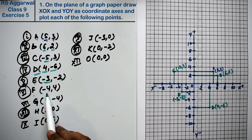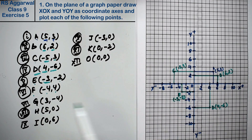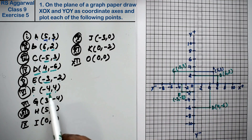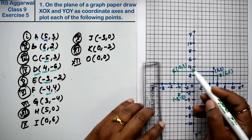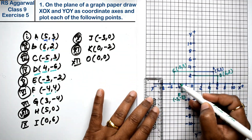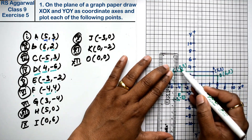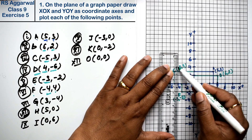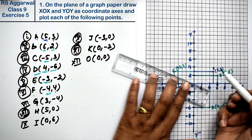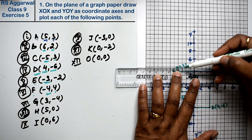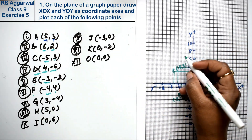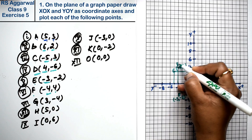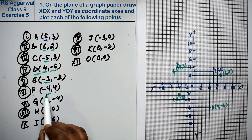Next is point F: minus 4 and 4. x is minus 4 and y is 4. This places it in the second quadrant. So this is point F at (-4, 4).